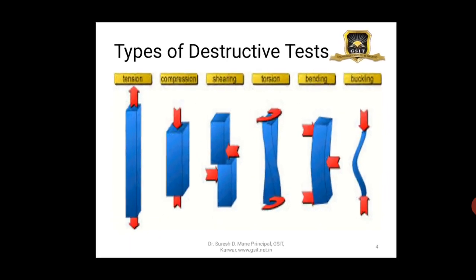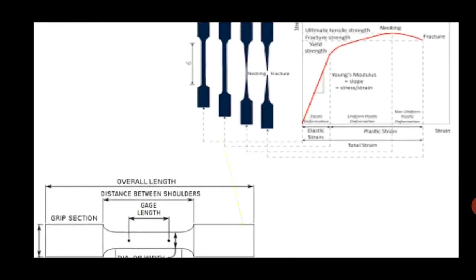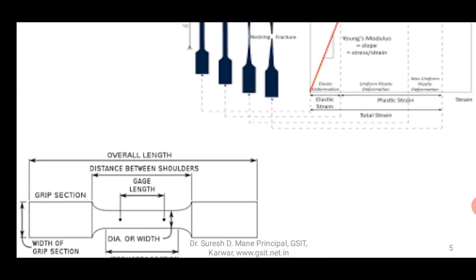In most of these, the specimen gets deformed or damaged and hence cannot be used again — that is why they are known as destructive tests. They are not very common; only in critical areas where safety is essential are destructive tests conducted. For example, in tensile testing there is a standard specimen.